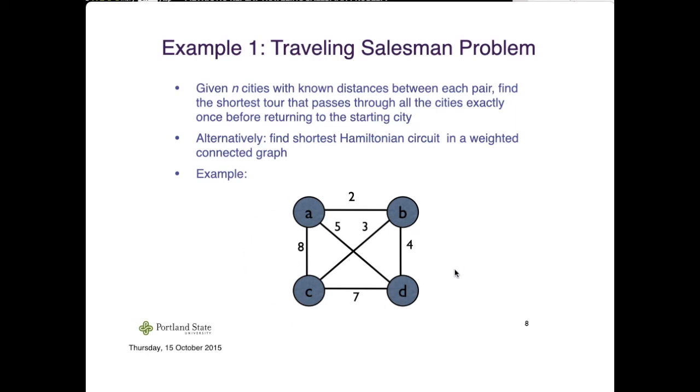Since we can easily calculate the straight line distance between different cities, we can have a complete graph of size 4 in this example. In the formal definition of the problem, given n cities with known distances between each pair, find the shortest tour that passes through all cities exactly once before returning to the starting city.